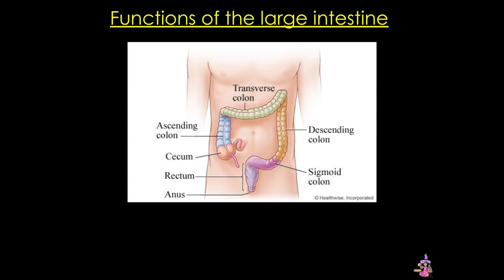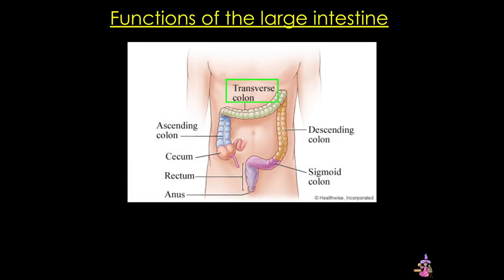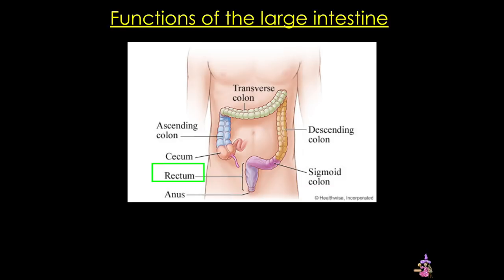The large intestine is formed by several successive segments: the cecum and the appendix projecting from it, the ascending, transverse, descending, and sigmoid colon, followed by the rectum and the anus.